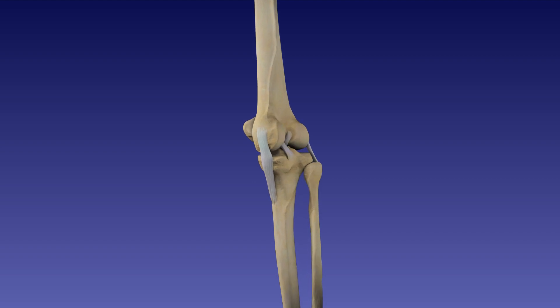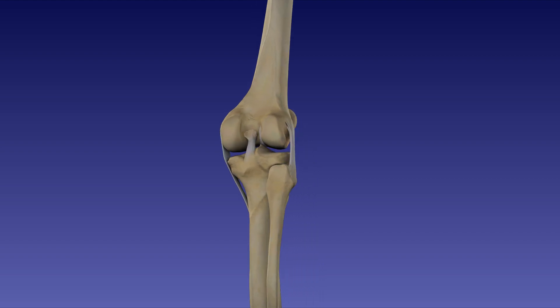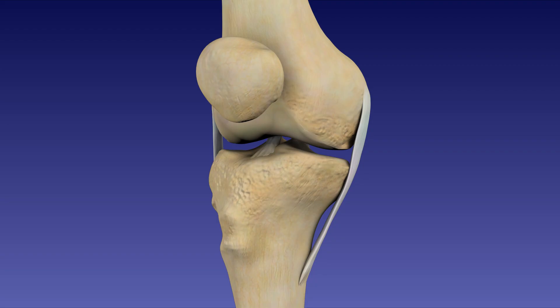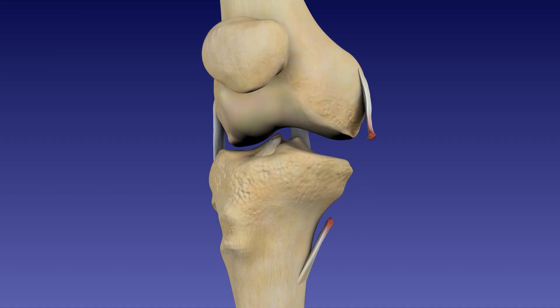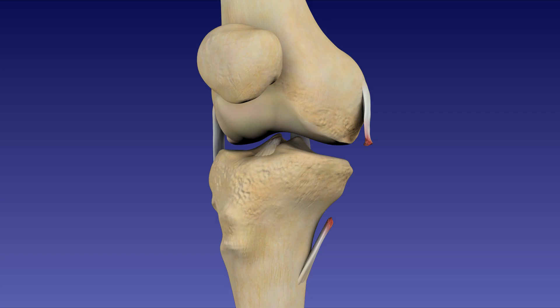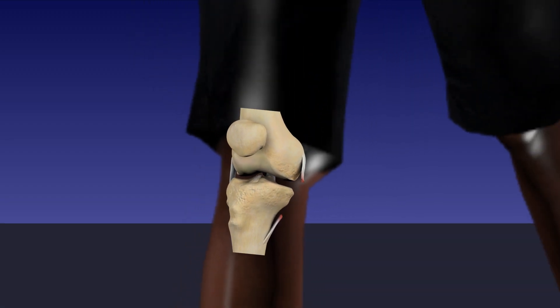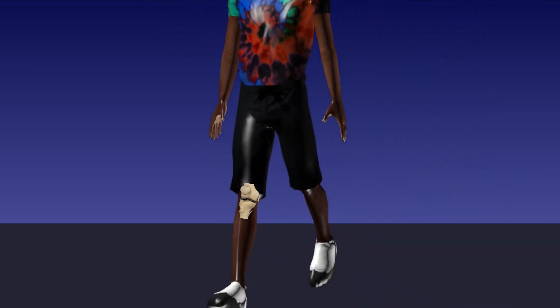Knee function can be impaired if the knee is hyperextended or hyperflexed. It is common to tear ligaments during activities that place pressure on the knees and involve twisting or cutting motions. There are several tests that are used to diagnose injury to the knee ligaments.